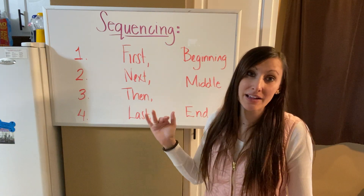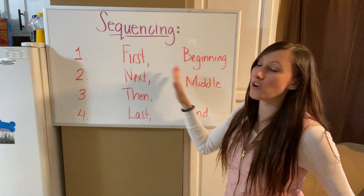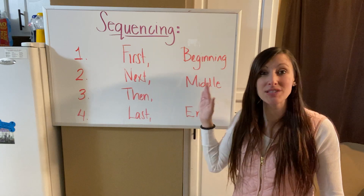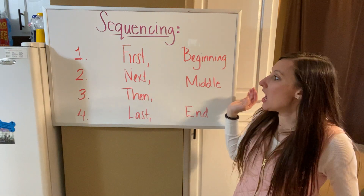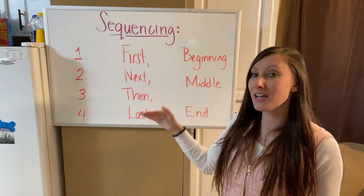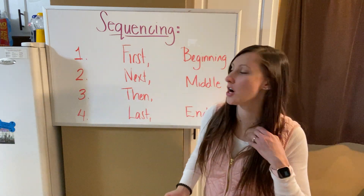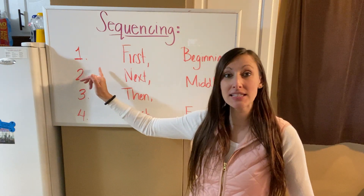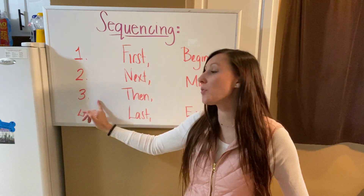Behind me I have different ways that you might see how people sequence, especially over here on this side of my board. This is what you guys are used to seeing when we sequence in school. This is not all the ways you can sequence, but this is what we're familiar with. Over here, you might see people sequence using numbers like one, two, three, and four.